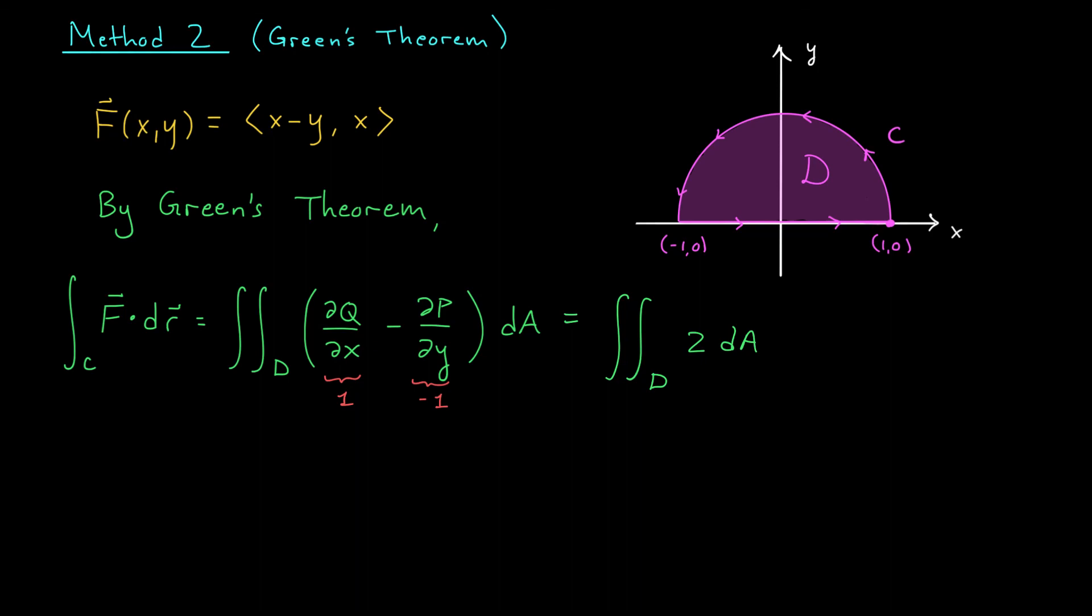But it's not too hard to integrate over this region. We can simply switch to polar coordinates. We have the integral from 0 to pi of the integral from 0 to 1 of 2 times R dr d theta. Our theta integral will evaluate to pi, and an antiderivative for the R integral is R squared. We evaluate from 0 to 1, and we get a final answer of pi. And that's the whole computation. So between the method on the last slide and Green's theorem, I'll let you decide which method do you prefer.